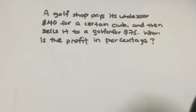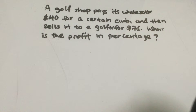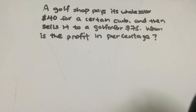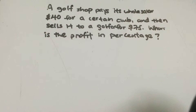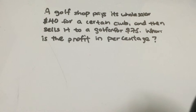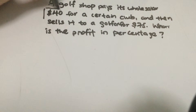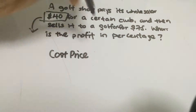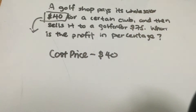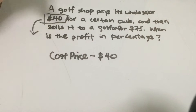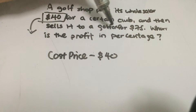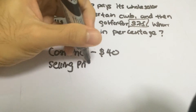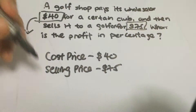The first thing we need to identify is the cost price as well as the selling price. The cost price is the amount that you pay — so the amount paid to the wholesaler is the cost price, which is $40. The selling price is how much you sell it for — you sell it to a golfer for $75, so the selling price is $75.